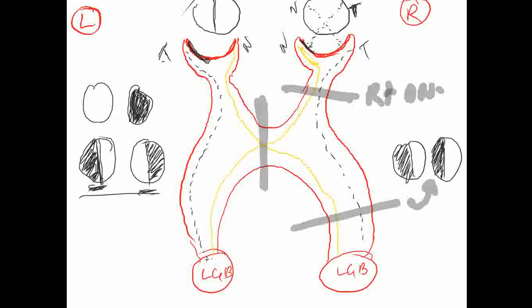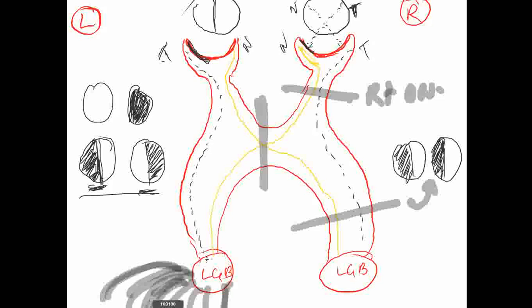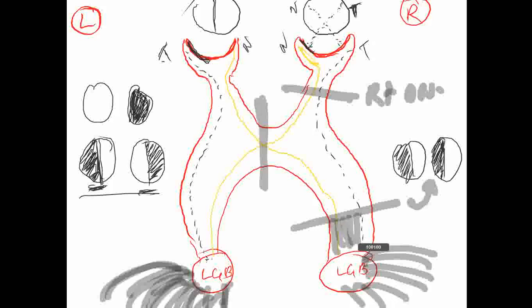One correction: only after the lateral geniculate bodies are there optic radiations. The optic radiations go to the parietal and the temporal areas. Some fibers go to the parietal area and some go to the temporal fibers. There was a collection of nerves that spreads out after the lateral geniculate bodies. If there is a defect in these fibers, whenever there is injury to the brain, it is not that the whole optic radiation will be affected at once — only the parietal lobe or only the temporal lobe may be affected.